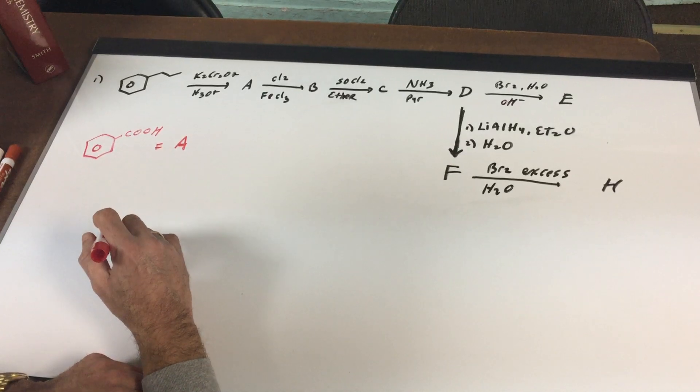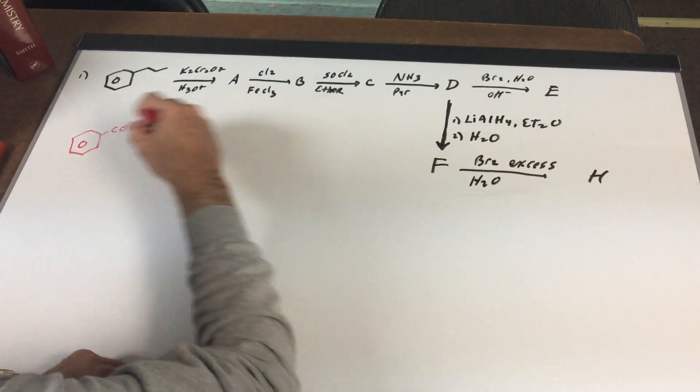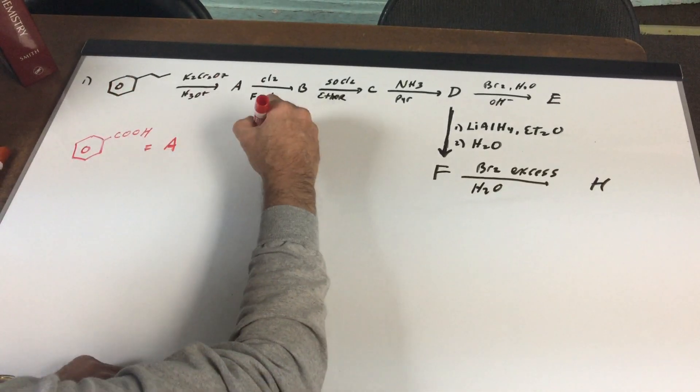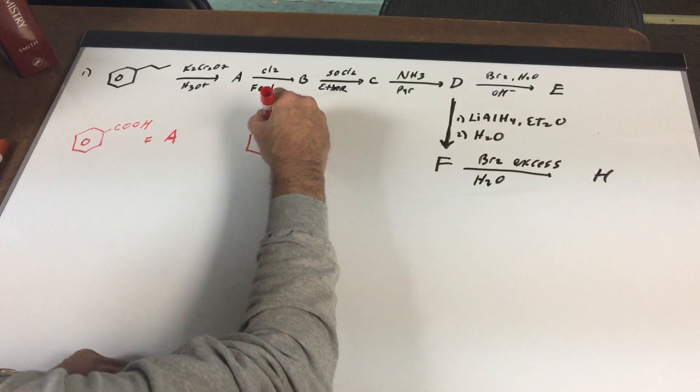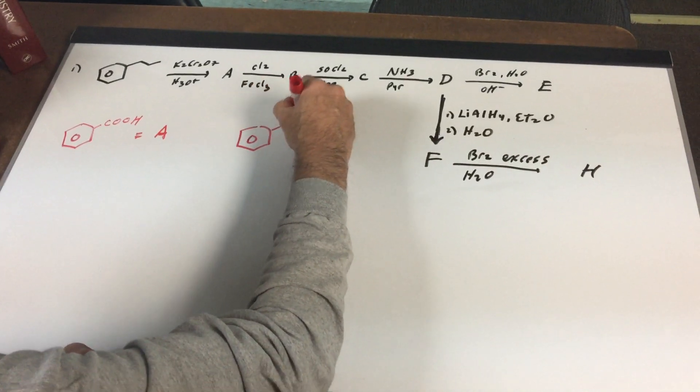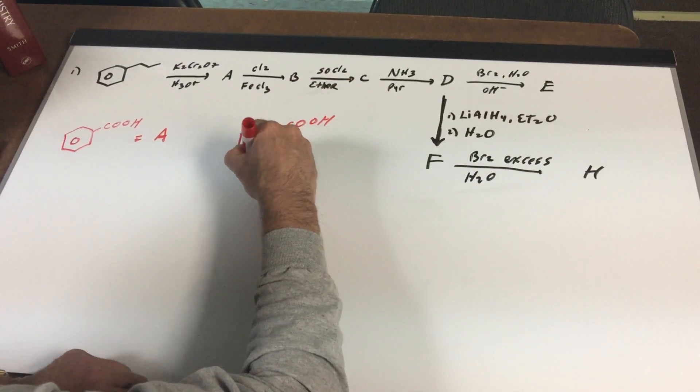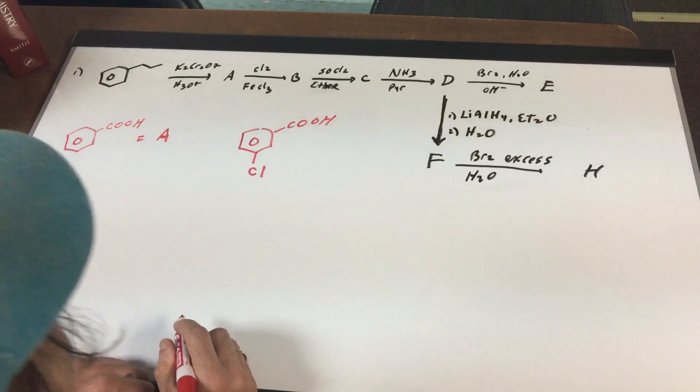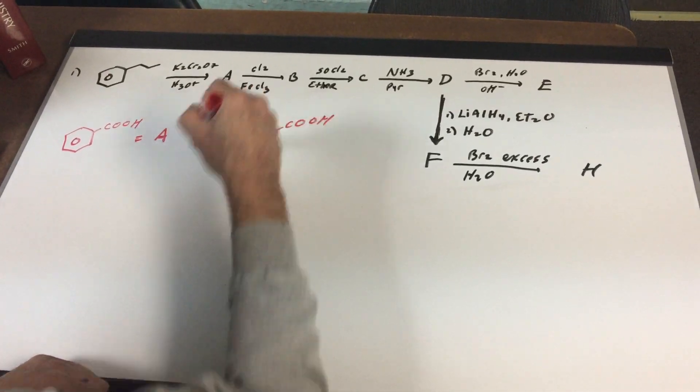Step B is simply a halogenation. And this group is a meta-director. So we are going to have the benzoic acid, the carboxylic acid group, direct the chlorine into the meta position. And that would be letter B.